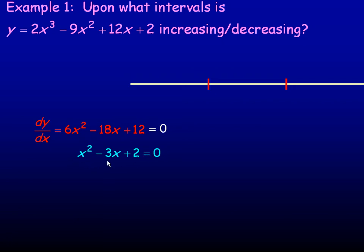So we would try to factor this. I wouldn't bother to use the quadratic formula because it factors fairly easily. Look for two numbers to add to -3 and multiply to positive 2. So that's -1 and -2. So (x - 1)(x - 2) would be the factors. Setting each of these to 0, we get 1 and 2 as the places where the derivative is 0.